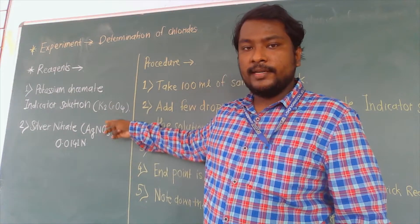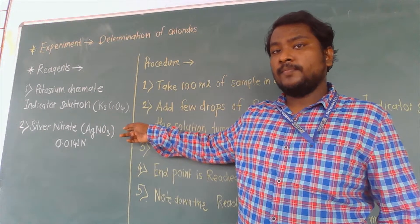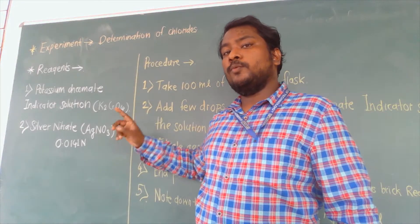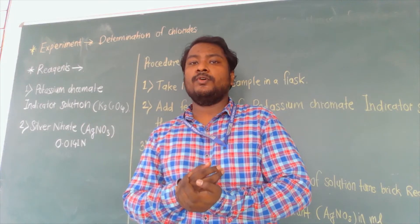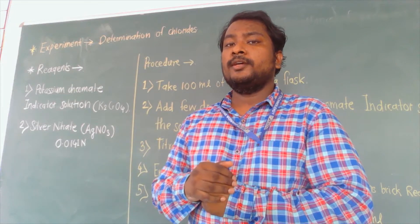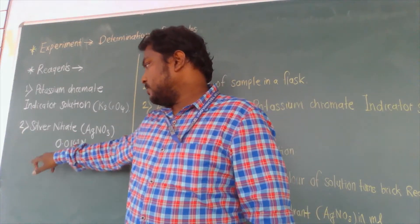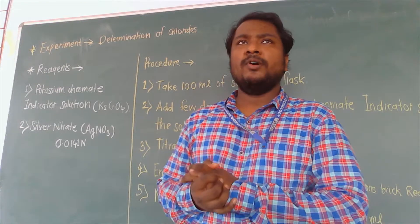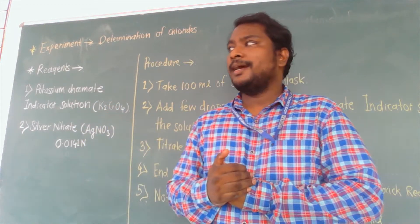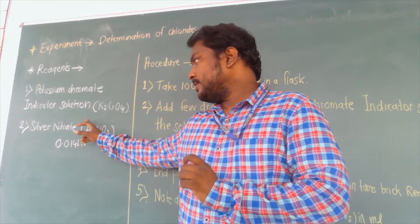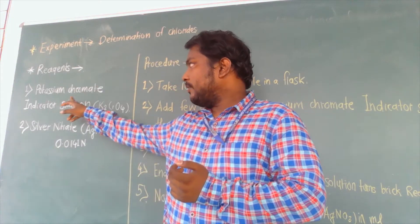There are two reagents. One is the indicator and the other is the titrant. The titrant is the chemical placed in the burette — its reading is used for the final calculation. The titrant used is silver nitrate, AgNO3, prepared at a normality of 0.0141 normal. This method is known as the Mohr's method of titration, named after the scientist who invented it. It is also known as argentometric titration because silver (Ag) is involved, with silver nitrate acting as the titrant.